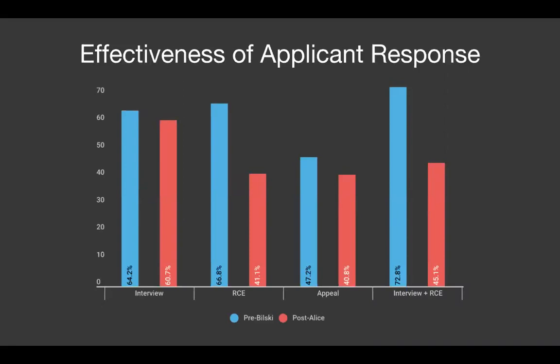By 'effectiveness' we mean the same thing as 'overcome' — the next office action is either a notice of allowance or another rejection that does not cite the same rejection basis. Bilski, Mayo, Myriad, and Alice have all taken their toll: success rates went down across the board for every type of response. RCEs are the most common applicant response, but they're not terribly successful in the post-Alice era with only a 41.1% effective rate. Before Bilski, an interview paired with an RCE was the most successful strategy at 72.8%. In the post-Alice era, the most effective strategy is now just an interview, with a 61% effective rate.